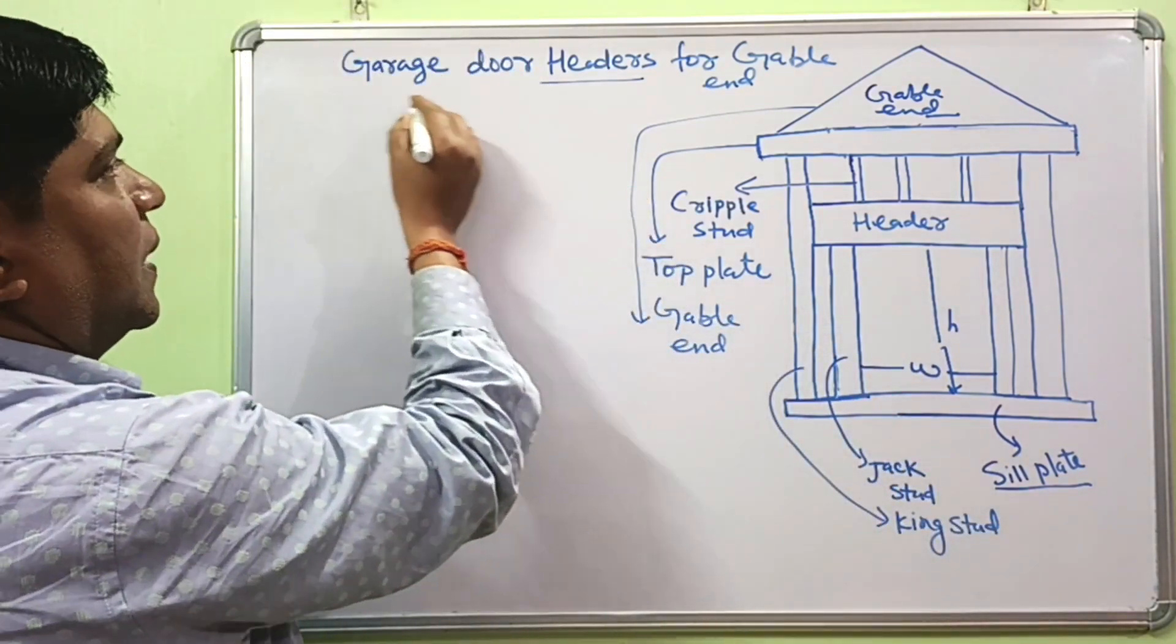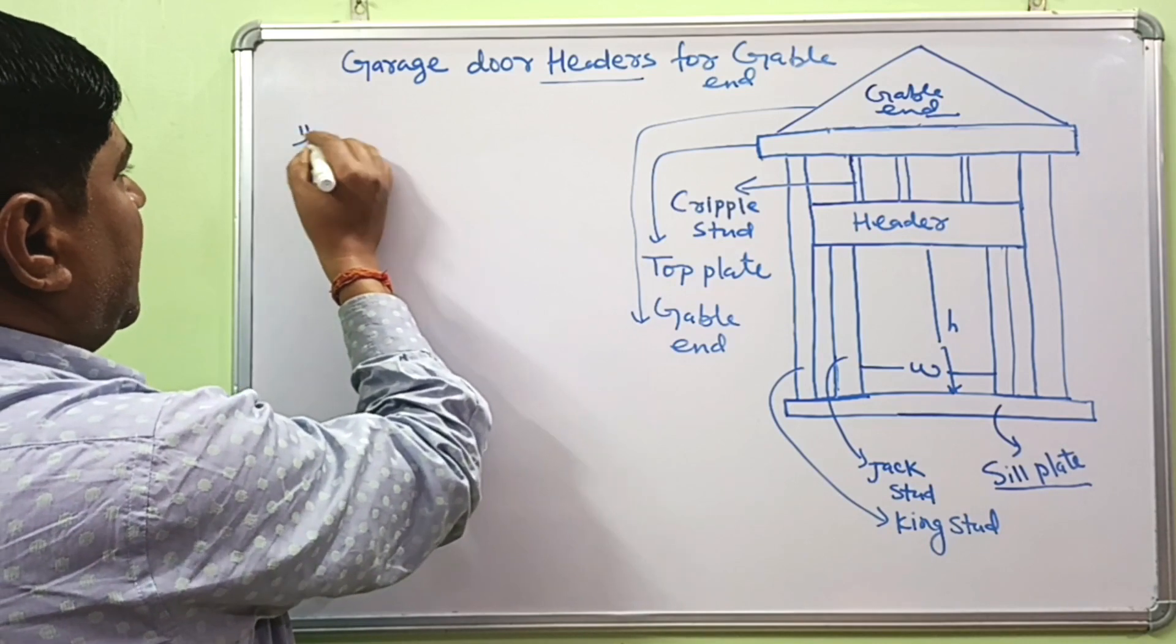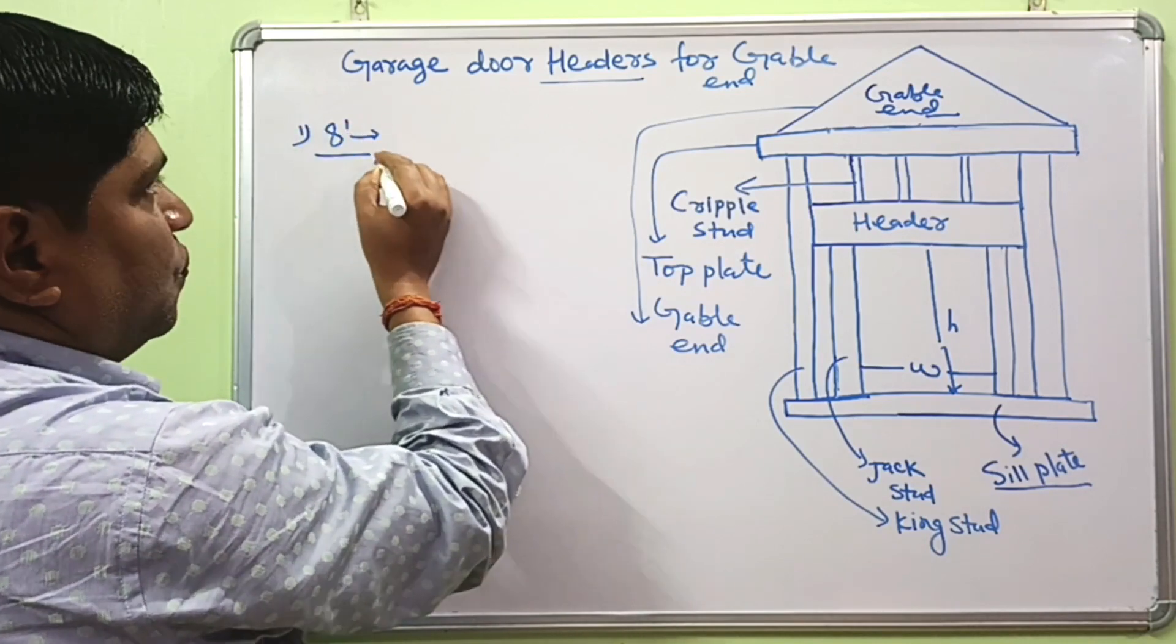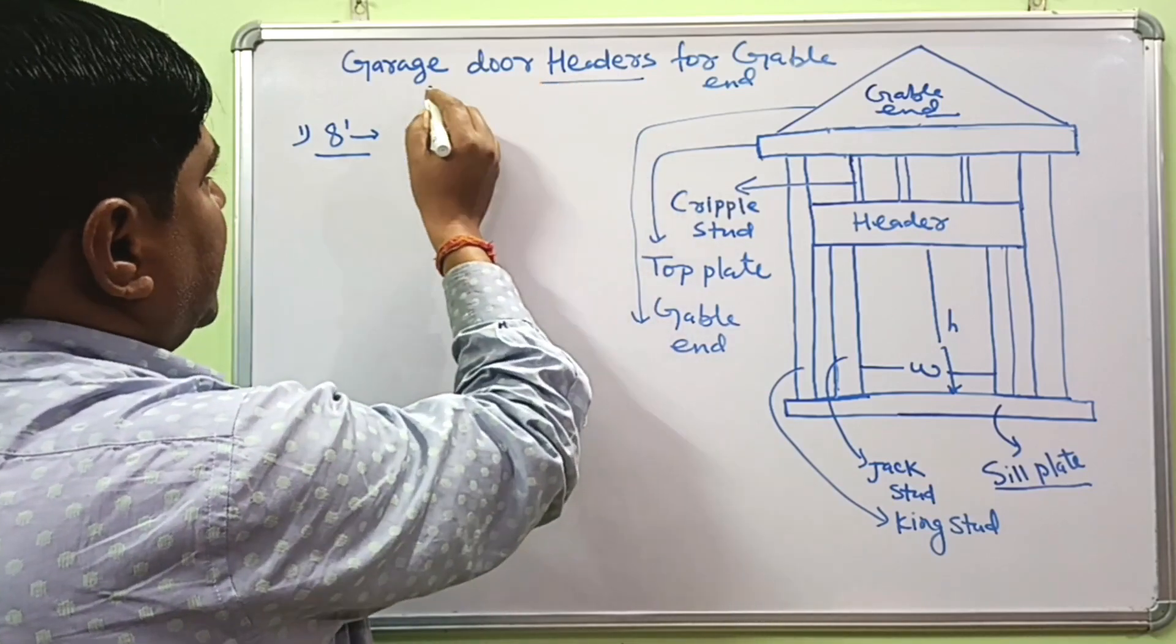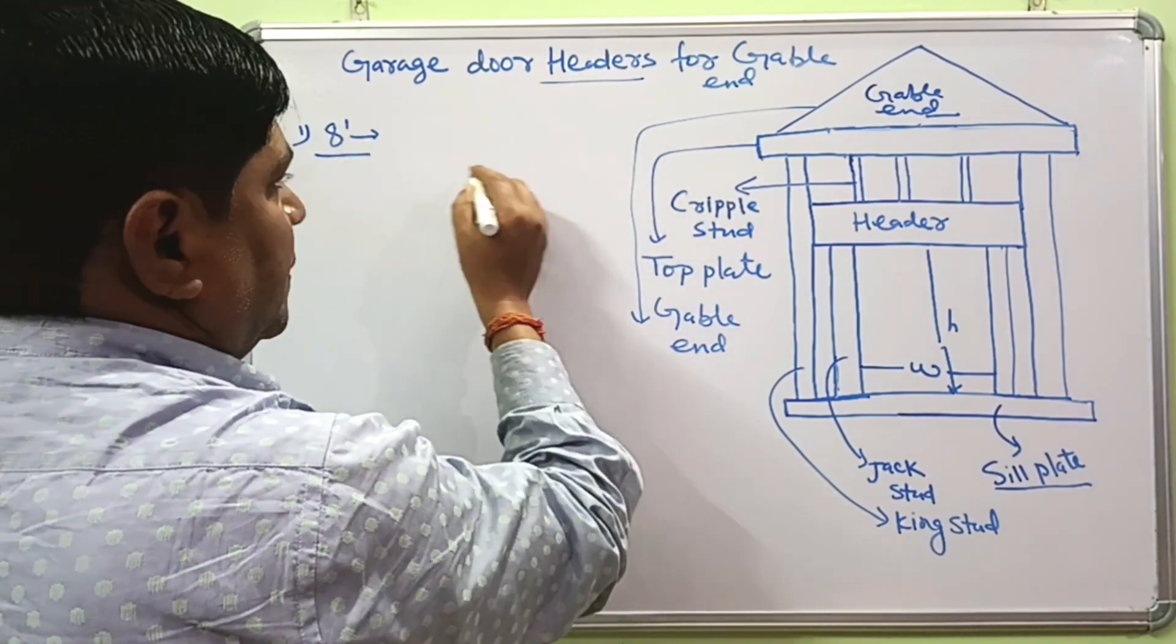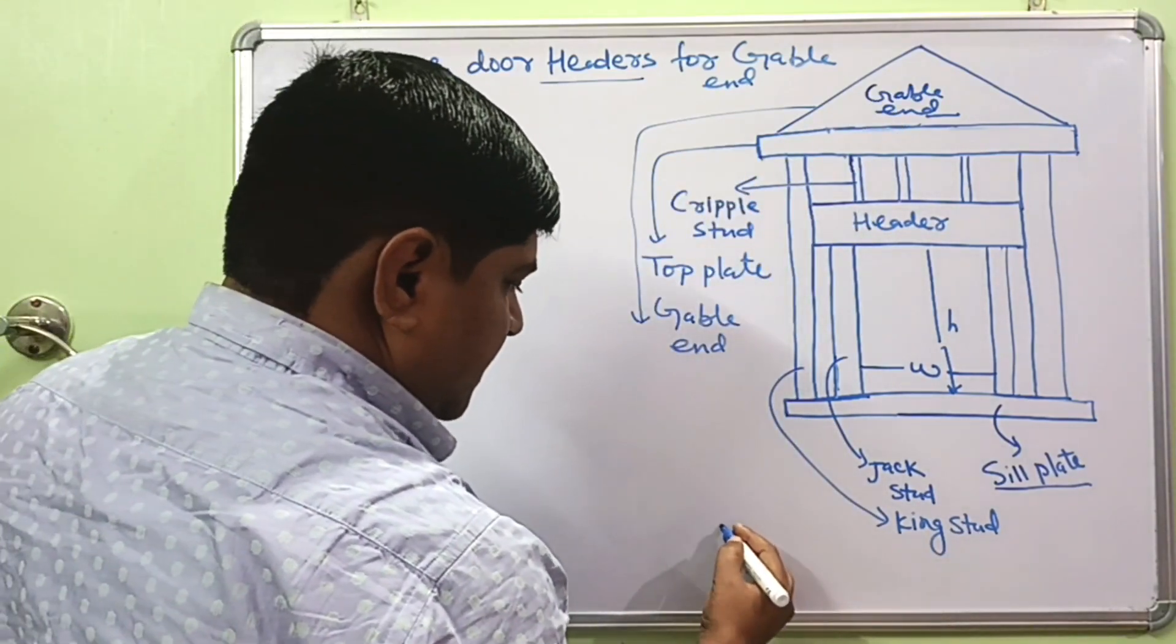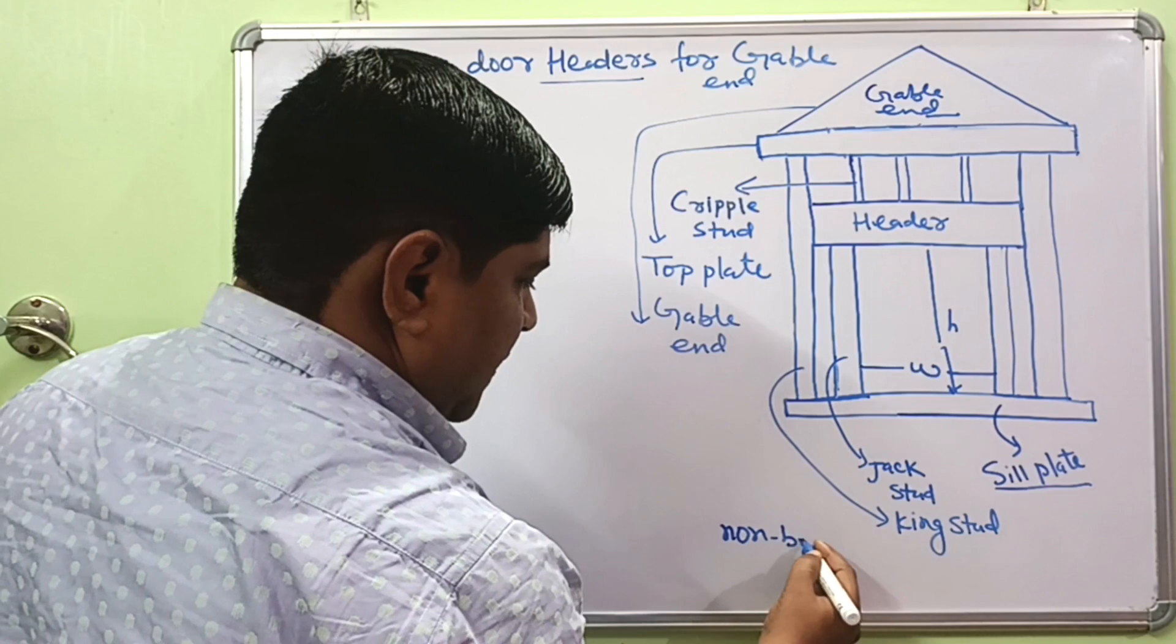Now, if your garage door opening is about 8 foot, how can you decide the correct header size required for 8 foot opening? If gable-end,